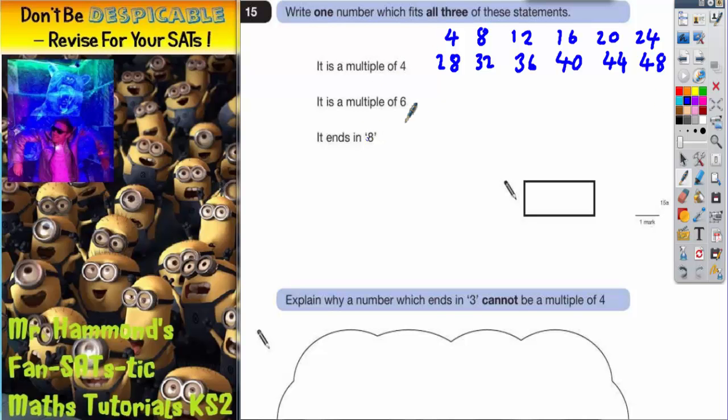So if we start with the four times table: four, eight, twelve, sixteen, and so on up to 48. Now what we'll do is we'll filter out only those that are also multiples of six.